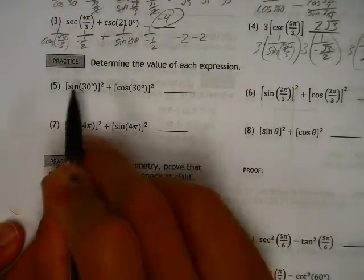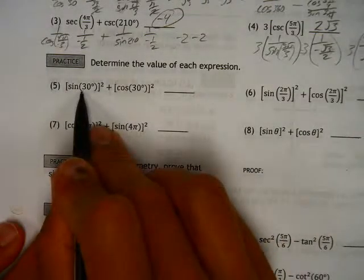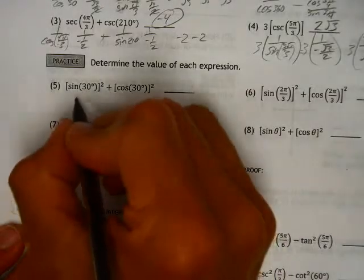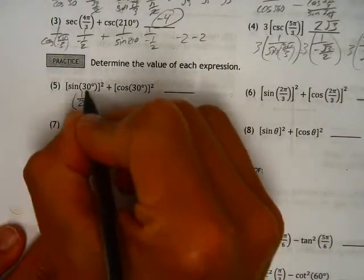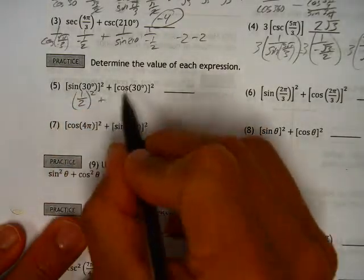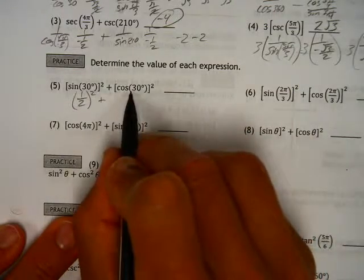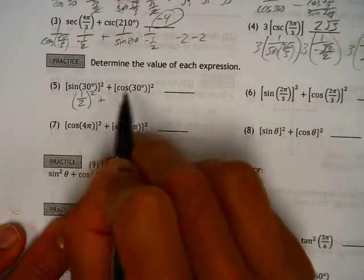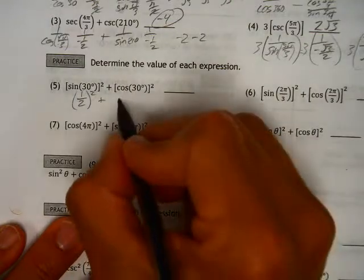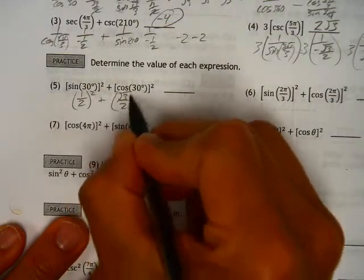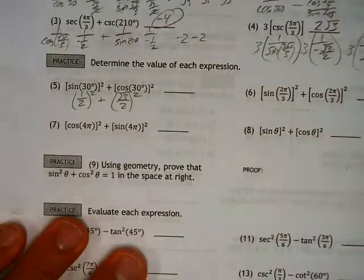Sine of 30 degrees, short triangle first quadrant, that's one half, the height of a short triangle. Now one half squared, we'll get to that in a second. Cosine of 30 degrees, that's also the short triangle, but it is the base, so that is root 3 over 2. We're going to square that as well.